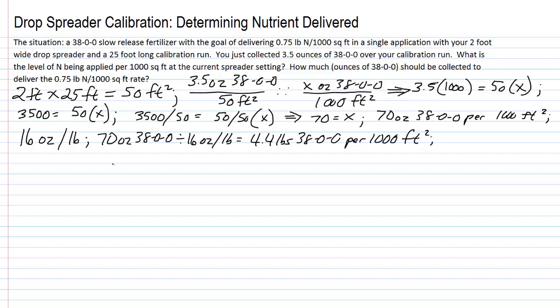Now that is pounds of the product. How much of that is nutrient? Since we are talking about 38-0-0 material, that means it is 38 percent by weight nitrogen. So 38 percent of the 4.4 is actual N. We calculate this number by multiplying 4.4 times 0.38, and that gives us 1.7 pounds of nitrogen per thousand square feet. That is the first answer: the level of N being applied per thousand square feet at the current calibration settings is 1.7 pounds of nitrogen per thousand square feet.